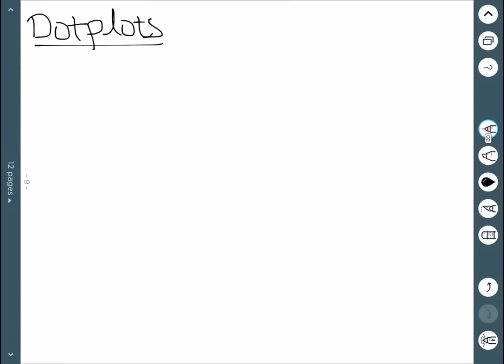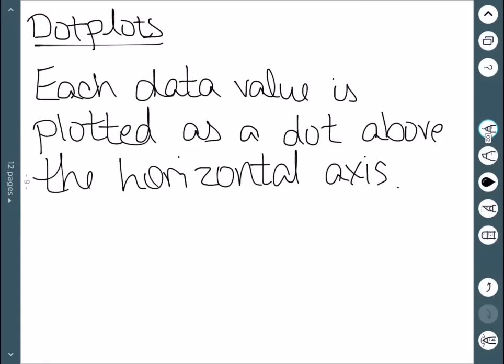Next, we'll look at dot plots. So dot plots are going to use lots of dots as indicated by their name. With a dot plot, we take every data point and plot it as a dot above the horizontal axis.